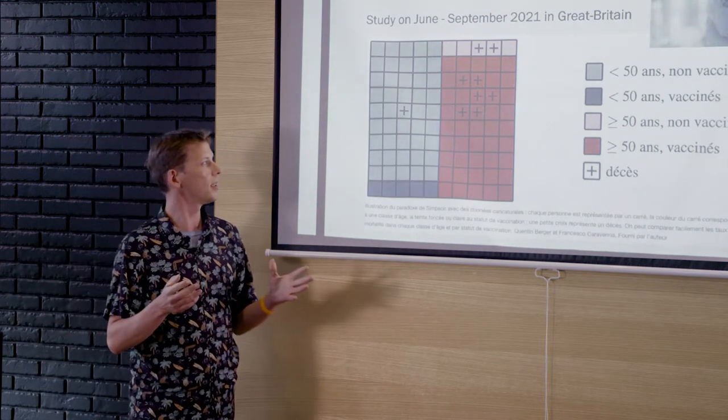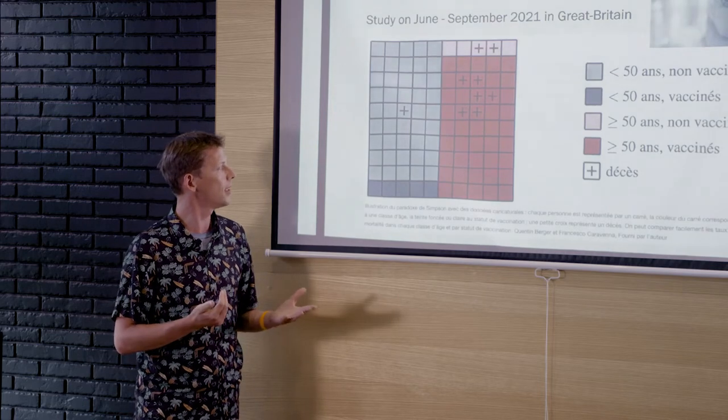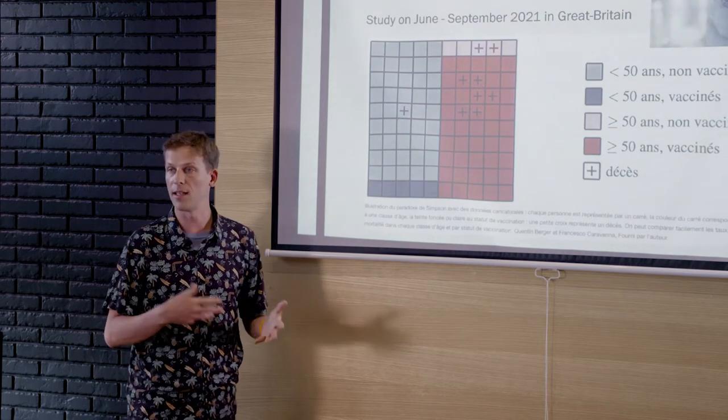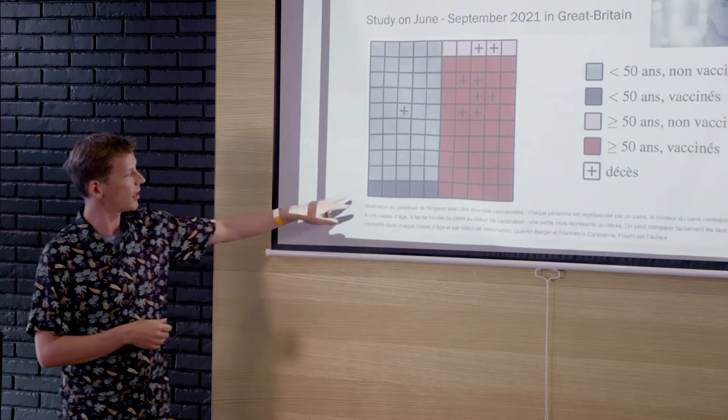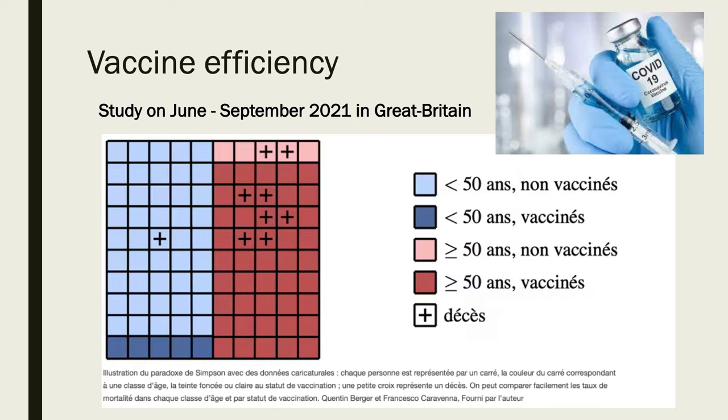But what is interesting here is that when I look at the young people, what I see is that vaccine is good for you. Because when you look at the vaccine guys, nobody gets disease from the COVID. And when you look at the unvaccinated guys, well, one of them, one of the squares get the cross. So it looks like the vaccine is good for you.